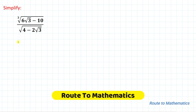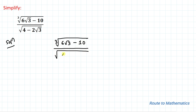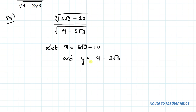Hello everyone, welcome to Root to Mathematics. In this video we are going to simplify this radical. The given question is cube root of (6√3 - 10) divided by square root of (4 - 2√3). Let's take x = 6√3 - 10 and y = 4 - 2√3.